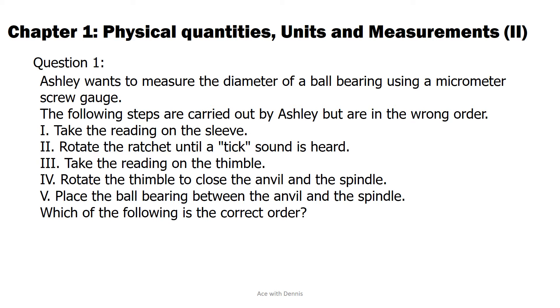2. Rotate the ratchet until a tick sound is heard. 3. Take the reading on the thimble. 4. Rotate the thimble to close the anvil and the spindle. 5. Place the ball bearing between the anvil and the spindle.